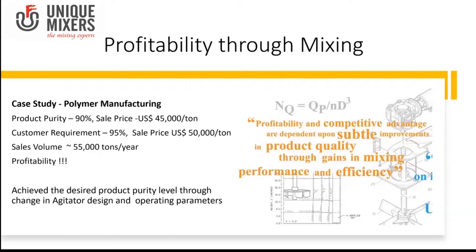The volume the company produced and sold was 55,000 tons per year. So the incremental benefit of $5,000 per ton multiplied by 55,000 tons — the profitability can only be imagined. You can make your business profitable by choosing the right mixer, concentrating on your mixing process, and improving product quality. In today's scenario, profitability and competitive advantage depend on subtle improvements in product quality through gains in mixing performance and efficiency. This is an actual case study we worked on to achieve the desired product purity.